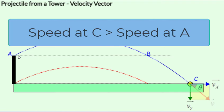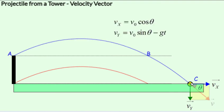So c speed is greater than v0, and v0 is the launch speed at a. This would happen as long as the launch point is higher than the landing point.